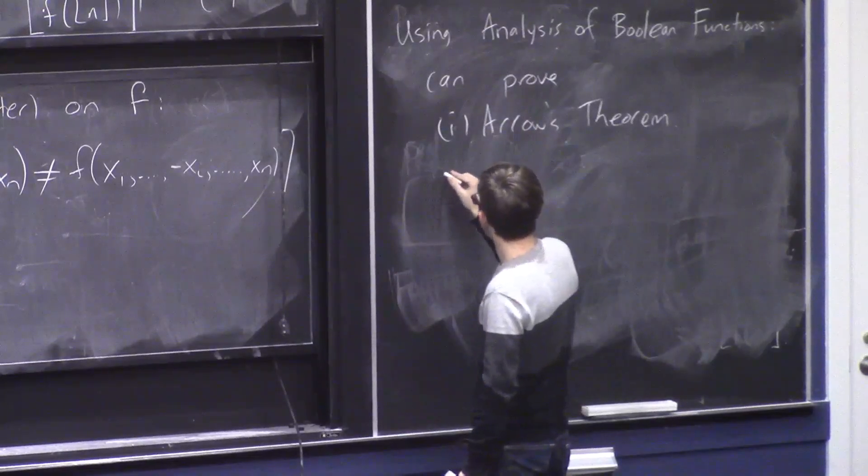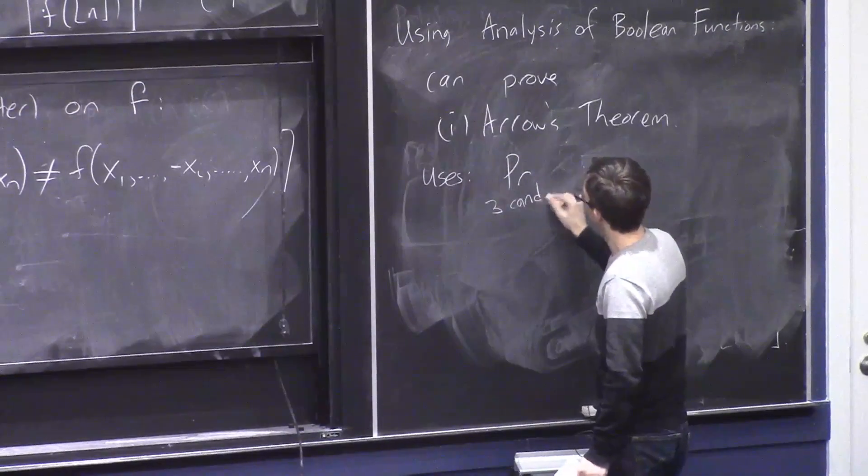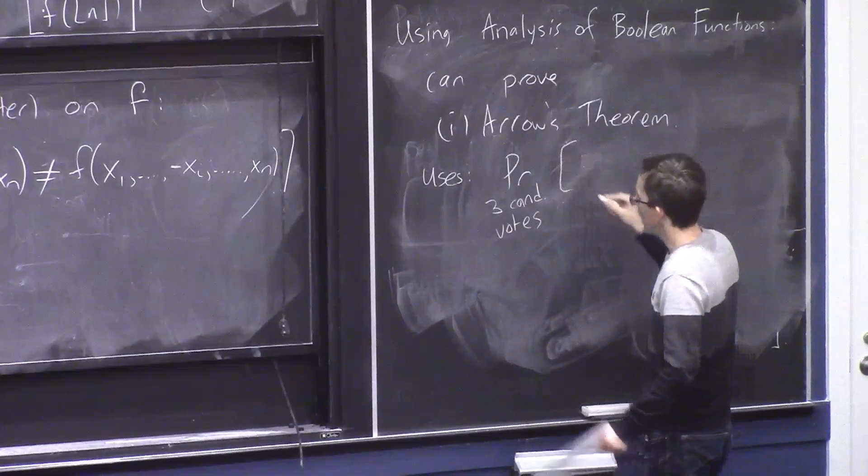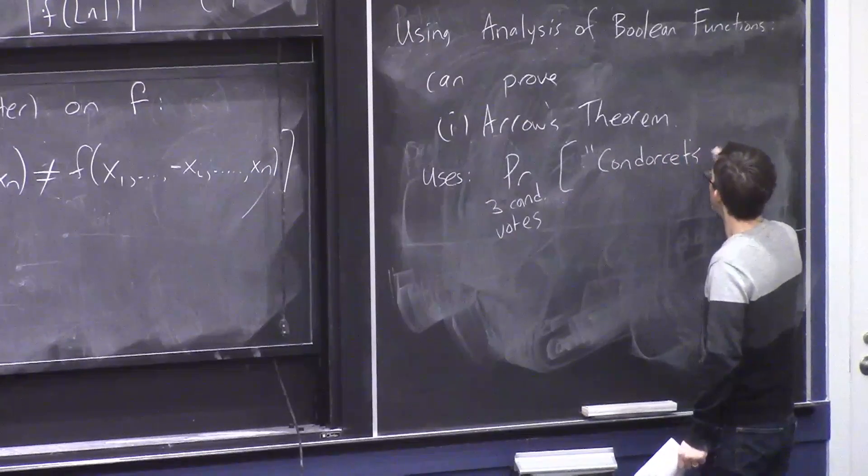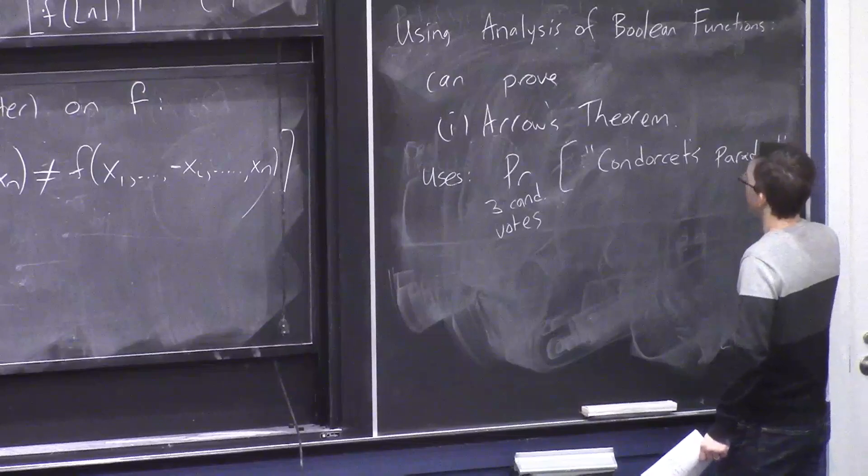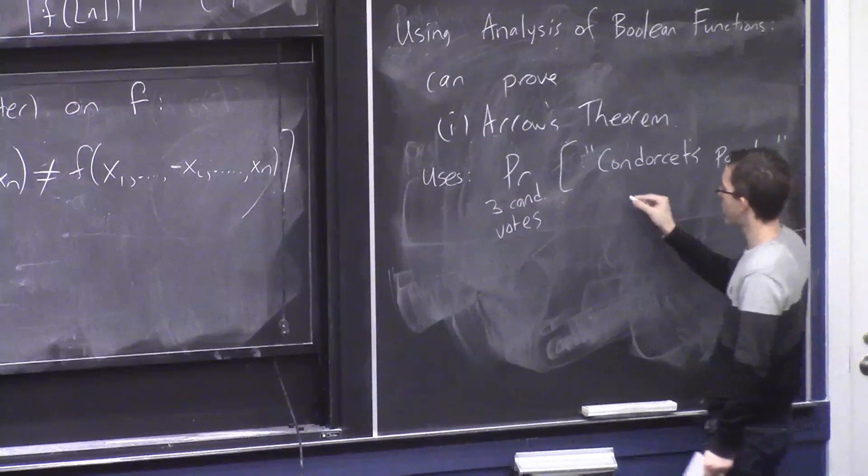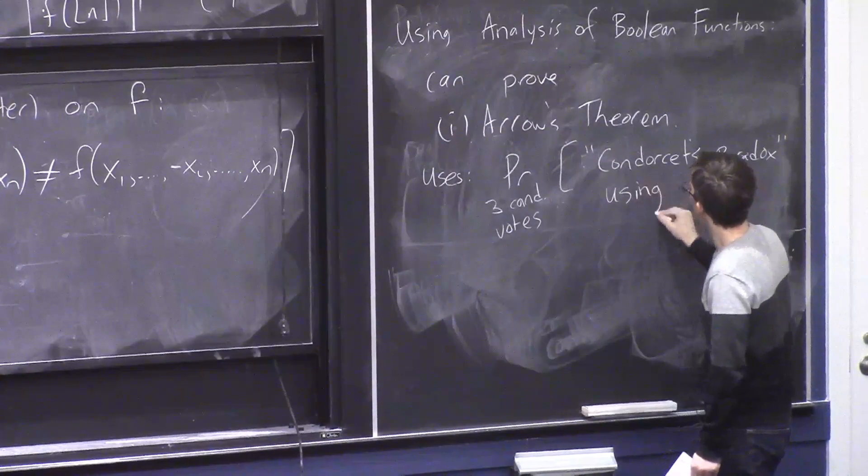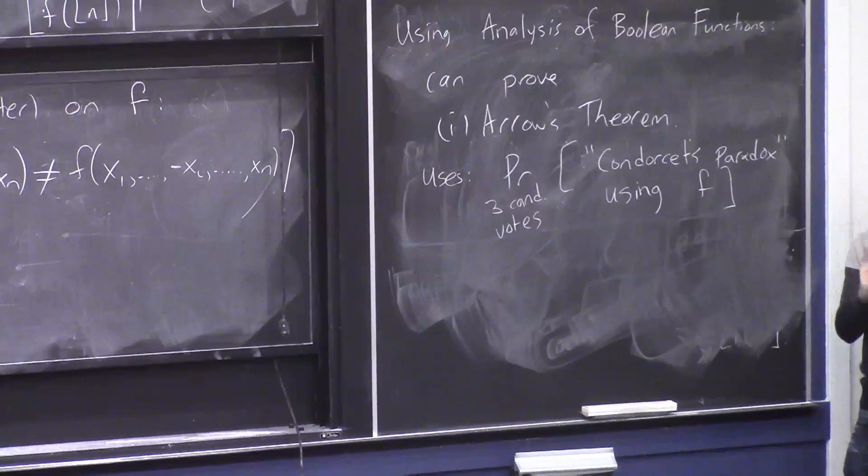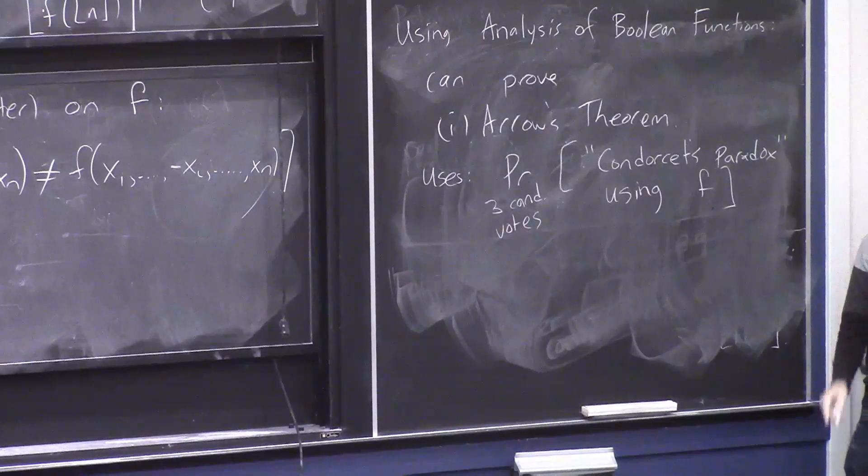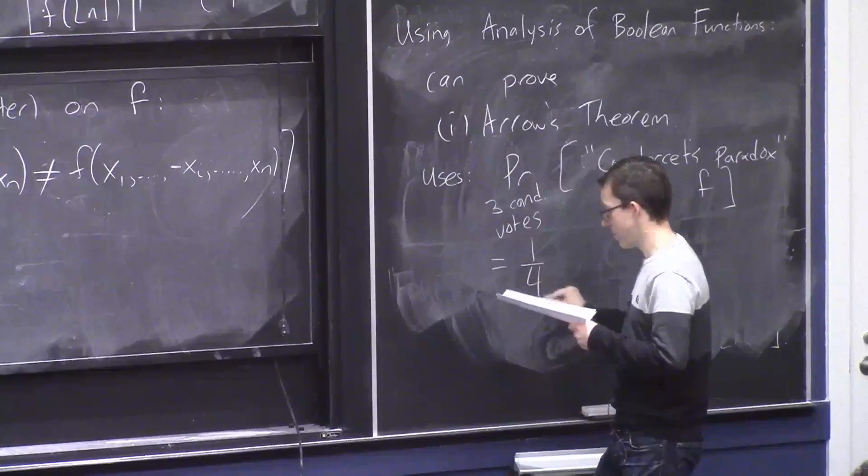There's a very nice proof. Maybe you'll see it on the homework of this theorem using analysis of Boolean functions. And it uses this fact. If you have a three candidate election, and you let people vote at random, and you try to aggregate their votes in a pairwise fashion, then you can get this thing called Condorcet's paradox, which is that the voters seem to prefer candidate A to candidate B, and they prefer B to C, and they prefer C to A. Which seems paradoxical, but can happen if you're using a voting scheme where you compare A and B using a two candidate rule F, and then you compare B and C using a two candidate rule F, and you compare A and C using a two candidate rule F.